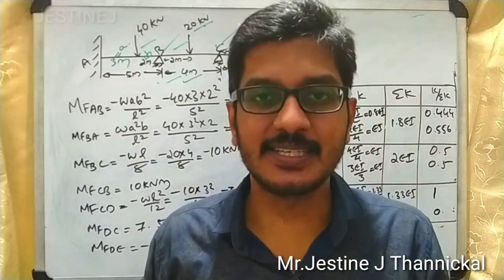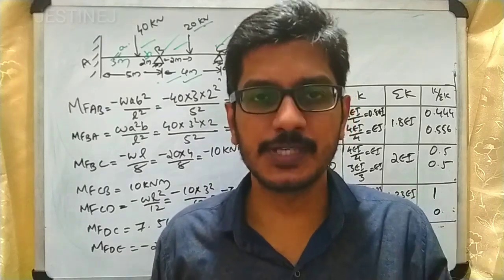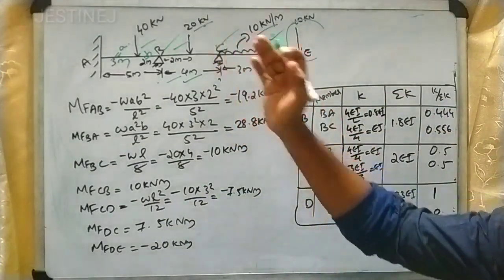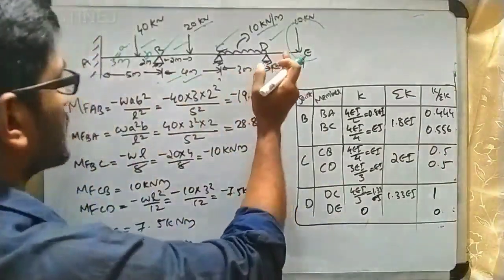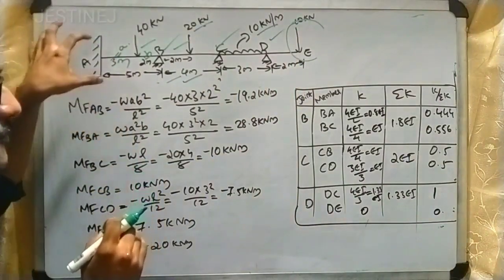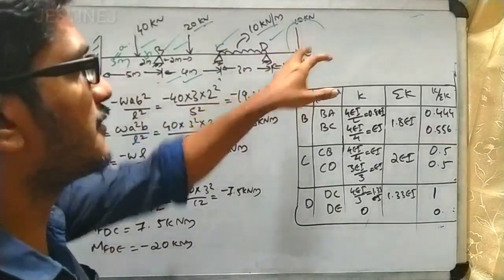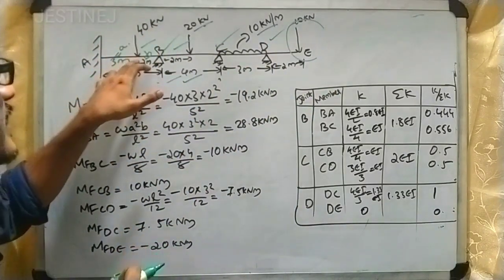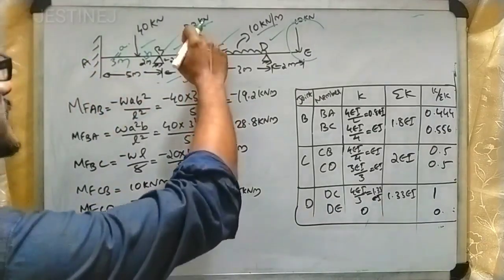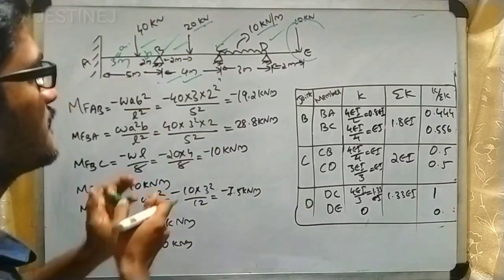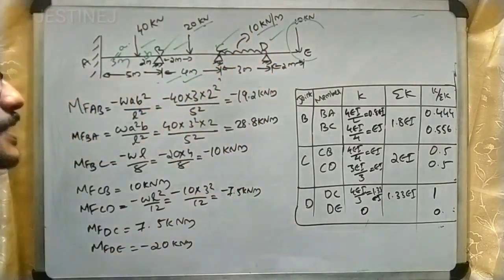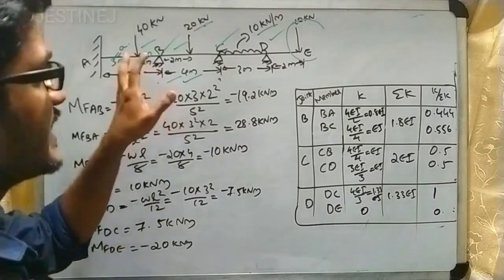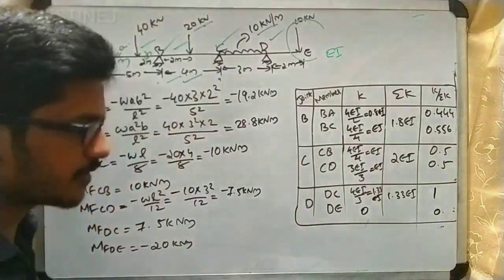Welcome back to a new video lecture. In this lecture we discuss how to analyze a continuous beam using the moment distribution method. A continuous beam is given with different supports: a fixed end at support A, hinged supports, and a free end at DE. Loads include 40 kN at 3 meters from A, 20 kN on the BC portion, a UDL of 10 kN/m, and 10 kN at free end E. EI is constant throughout the beam.